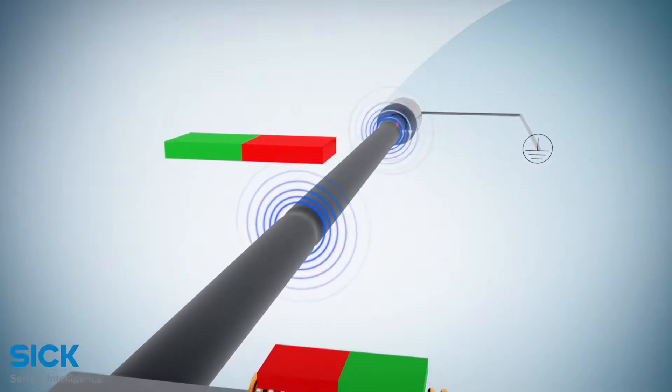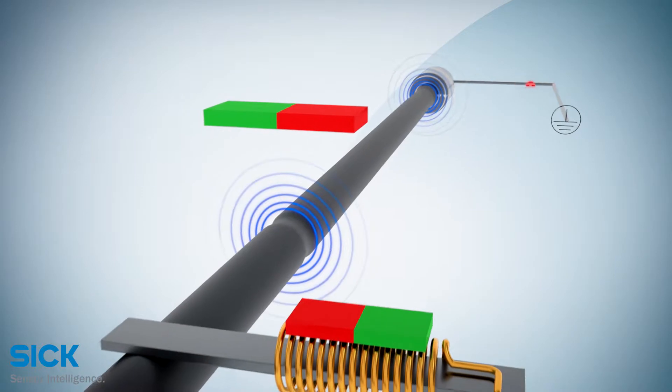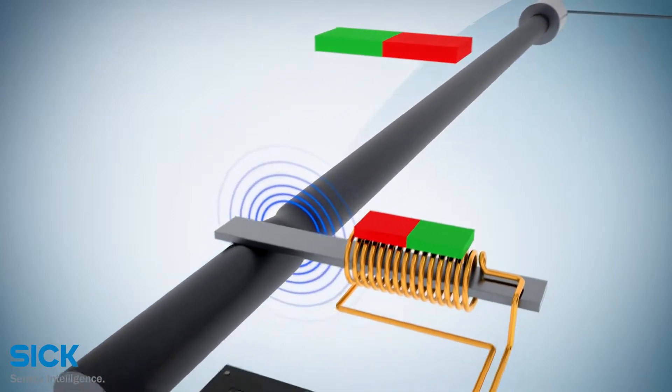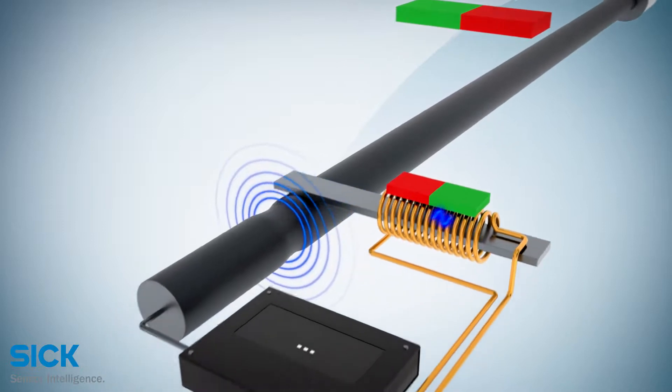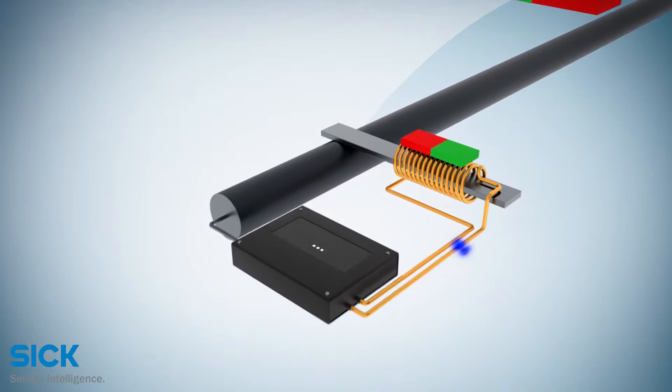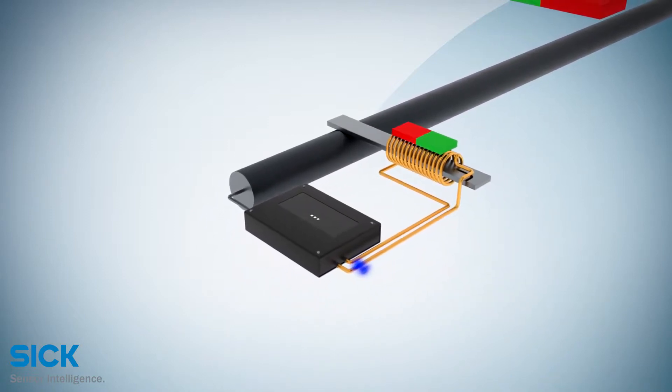To avoid disruption in the measurement, the strain pulse as well as the current pulse are damped at the end of the waveguide. The returning strain pulse in the direction of the measurement electronics is converted into an electrical signal by the pickup coil in the strain pulse converter.